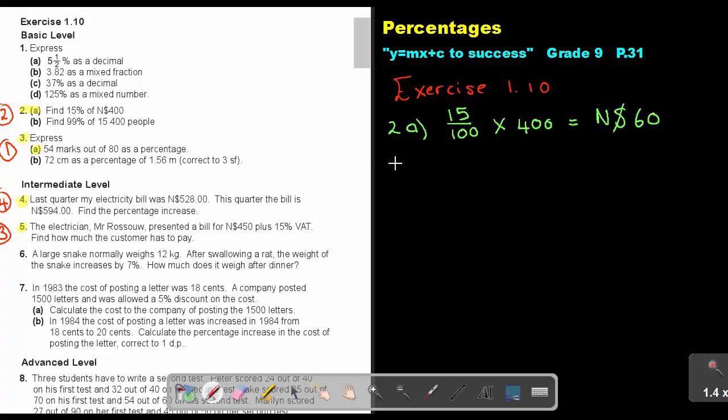If I look at number 3a, 54 marks out of 80 as a percentage. Can you remember? It's expressing one quantity as a percentage of another. So then it's 54 over 80 and I make it a percentage by multiplying with 100%. And if I do that, I will get 67.5%. That will be my answer.